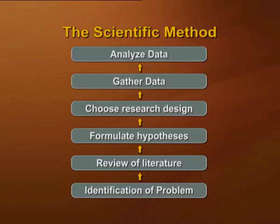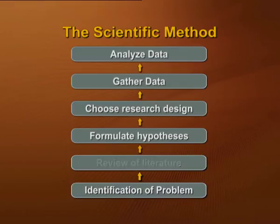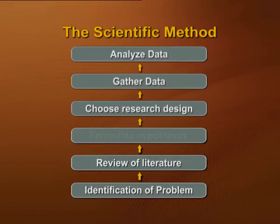Sociology breaks away from philosophical reflection and also from commonsensical knowledge. Sociologists employ a scientific method to understand social phenomena. The scientific method starts with identifying a problem and why that problem exists. Then comes the review of literature — finding out what has already been researched about that issue. A sociologist reviews that literature in detail, and based on that review, they formulate their hypothesis, which is an assumption we make.